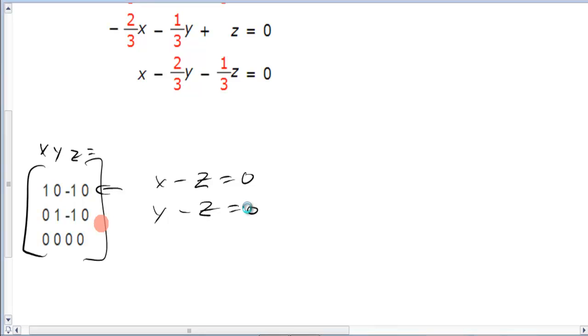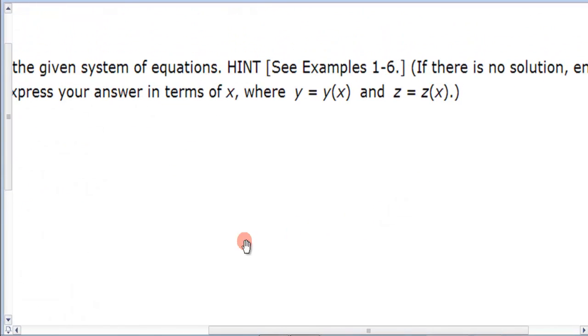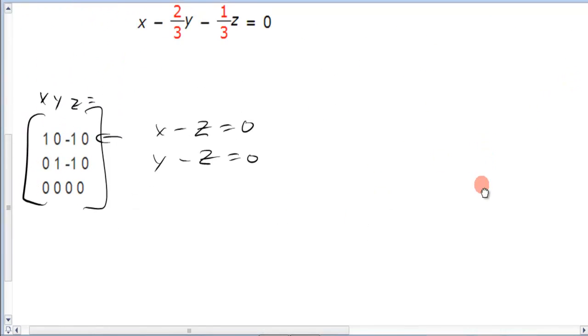Now, something that you may be missing here is the directions very specifically say they want the answer in terms of x, meaning everything should be written as functions of x. So therefore, this is a problem. Because how you solved it is so everything is in terms of z. So I've got x equals z and y equals z.